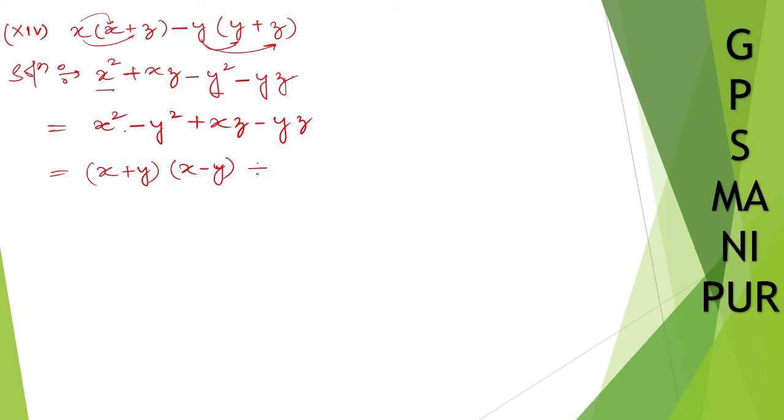From here, these two, I can take z common. If I take z out common, what's left out here is x and what's left out here is y. So x minus y.